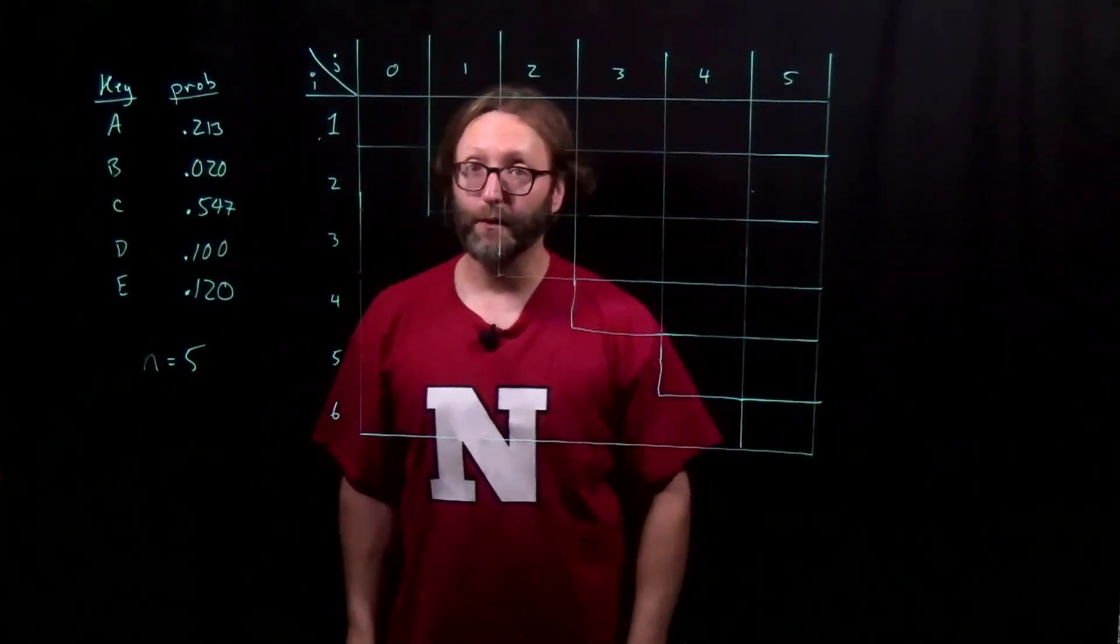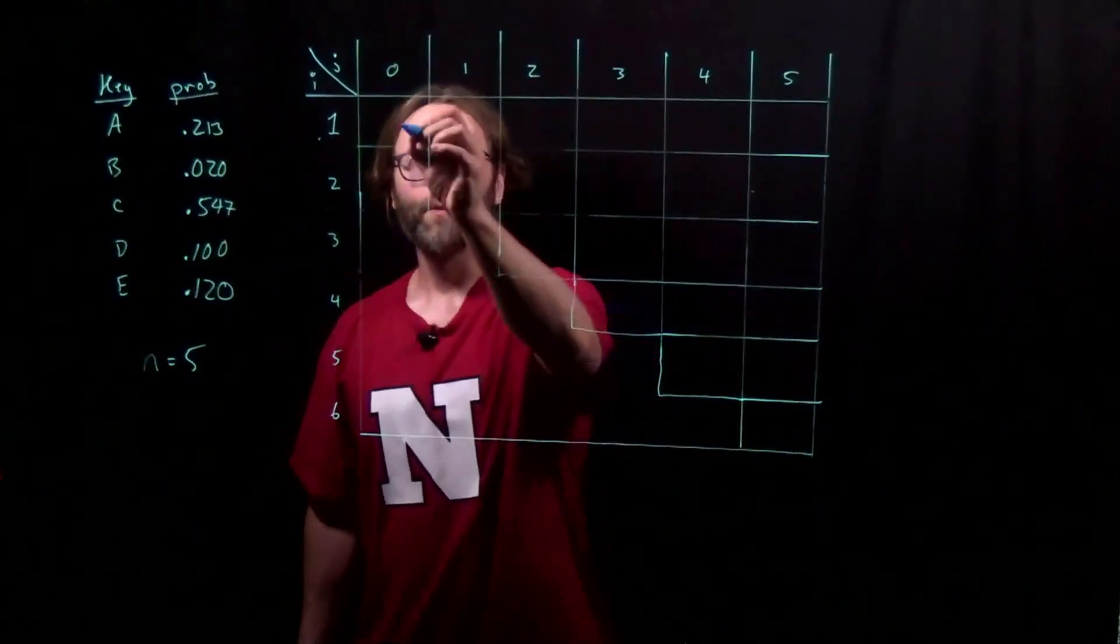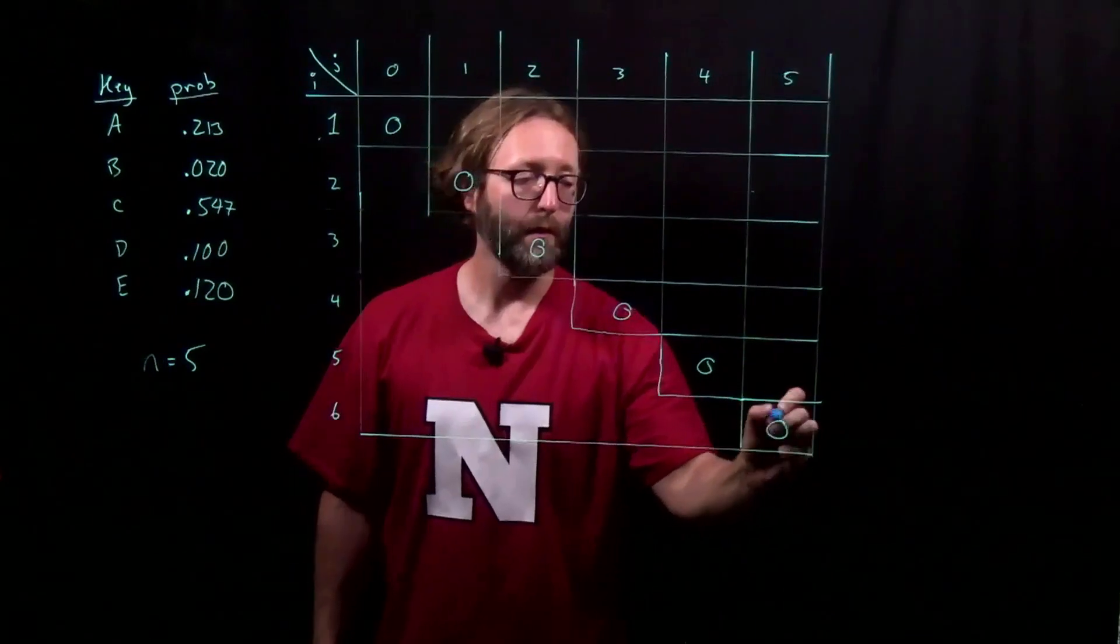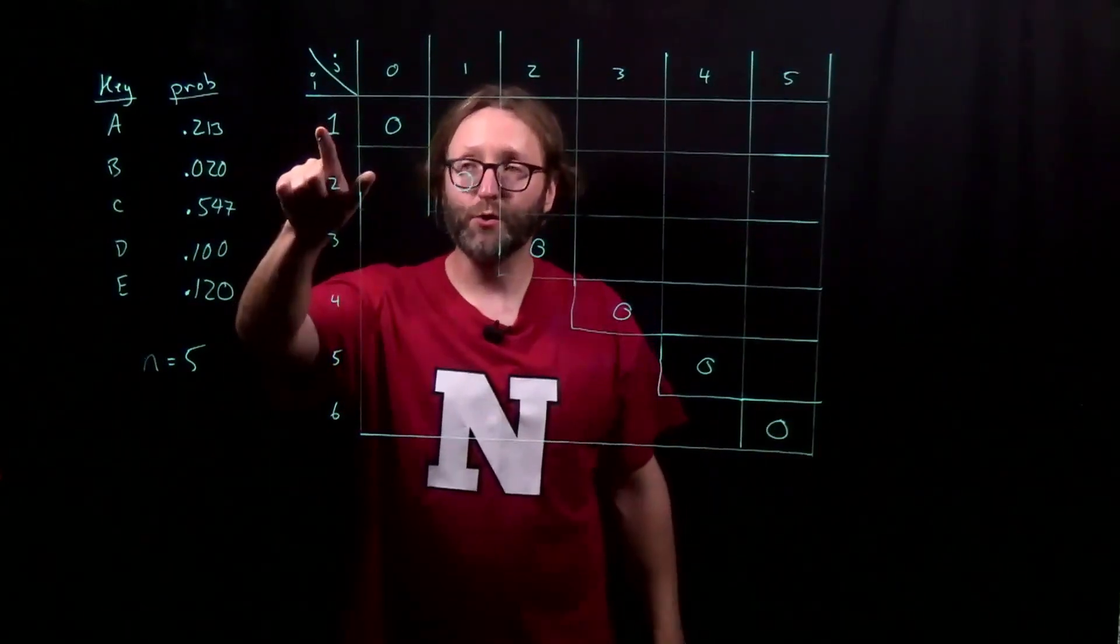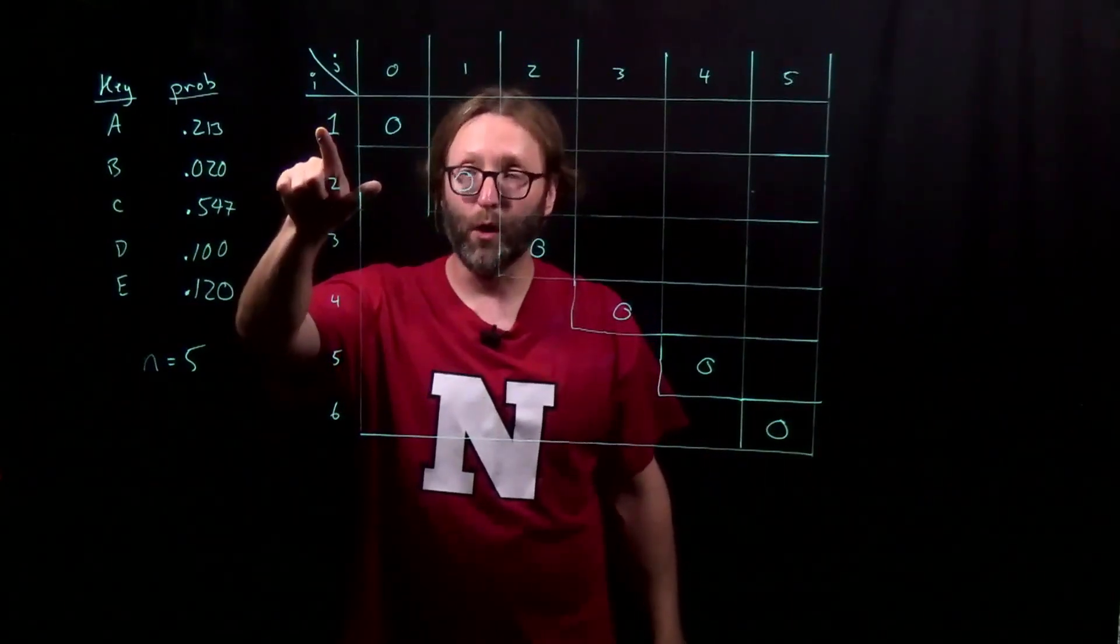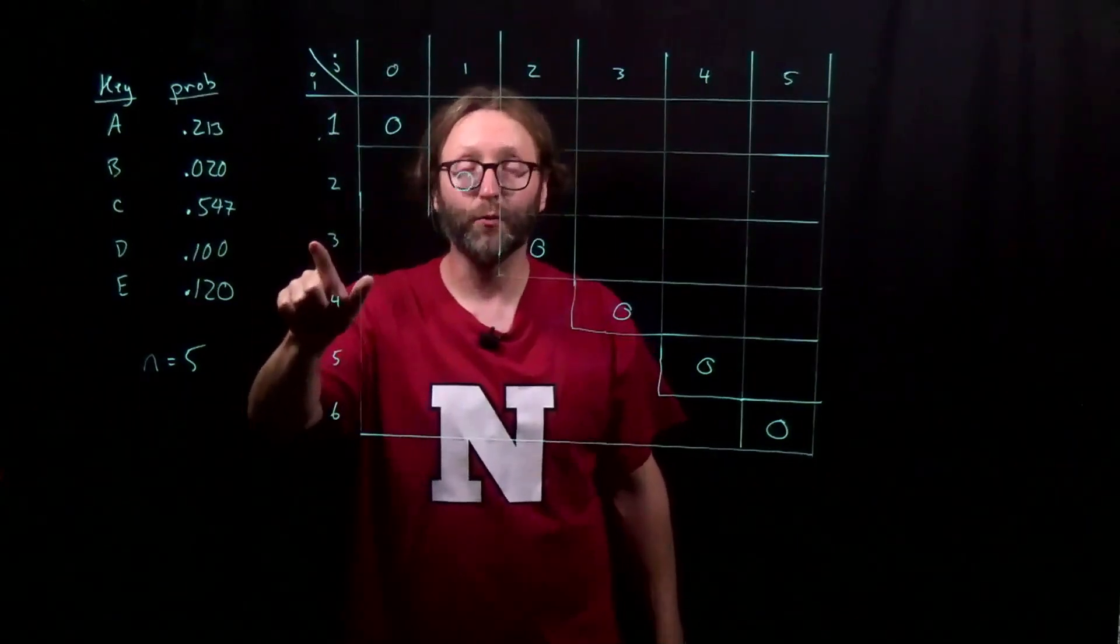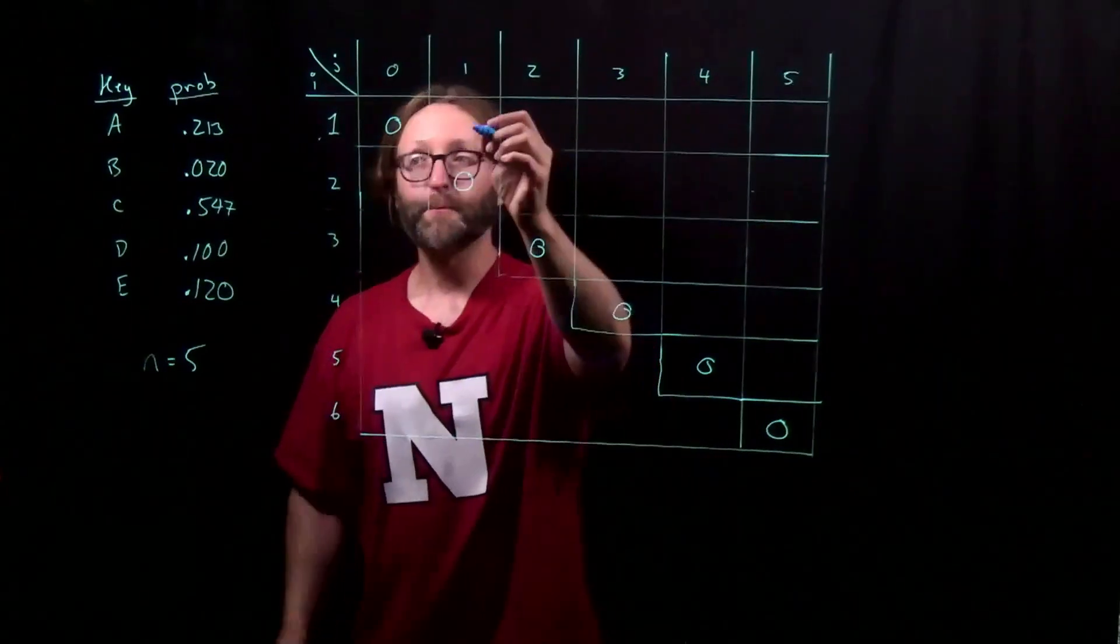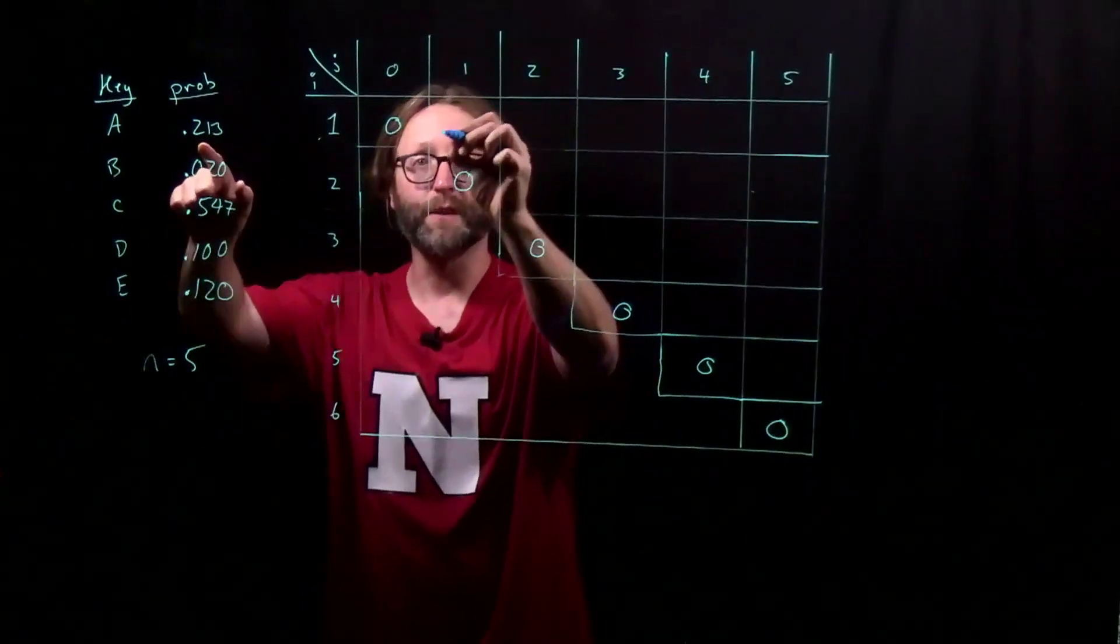Now, let's start by filling in the base cases. Remember along the diagonal, these are all zeros. Because there is no tree containing keys 1 through 0, or keys 3 through 2. Likewise, the next available diagonal is simply going to be the probabilities of each one of these things.